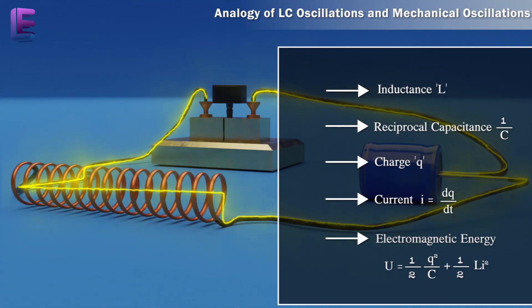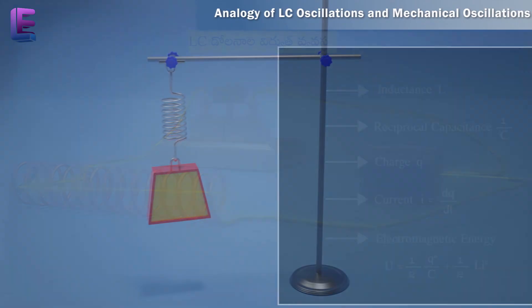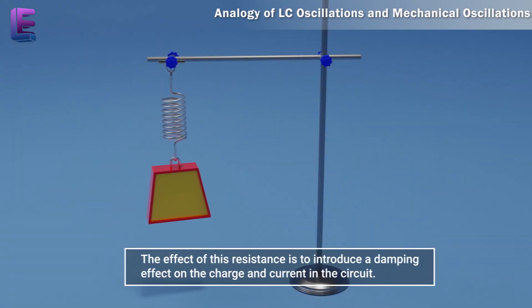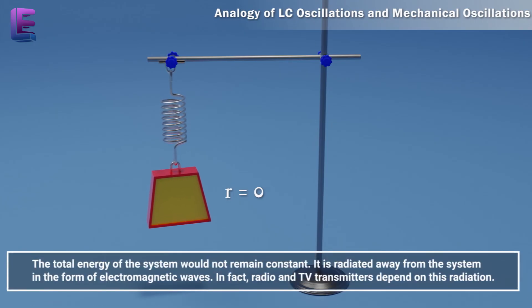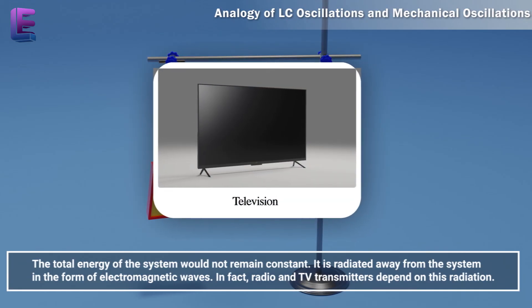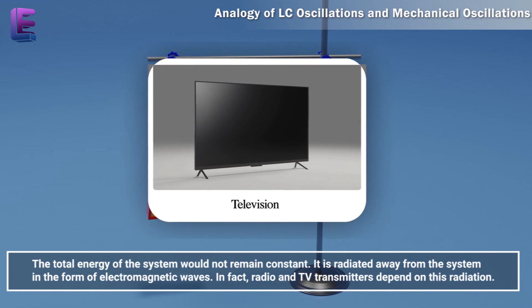Every inductor has some resistance. The effect of this resistance is to introduce a damping effect on the charge and current in the circuit. Even if the resistance were zero, the total energy of the system would not remain constant. It is radiated away from the system in the form of electromagnetic waves. In fact, radio and TV transmitters depend on this radiation.